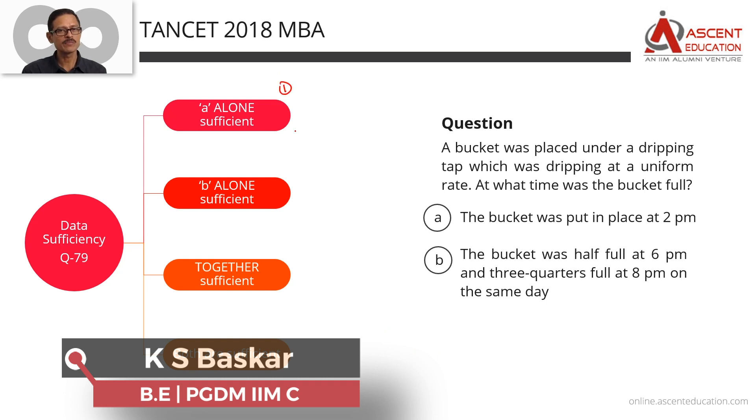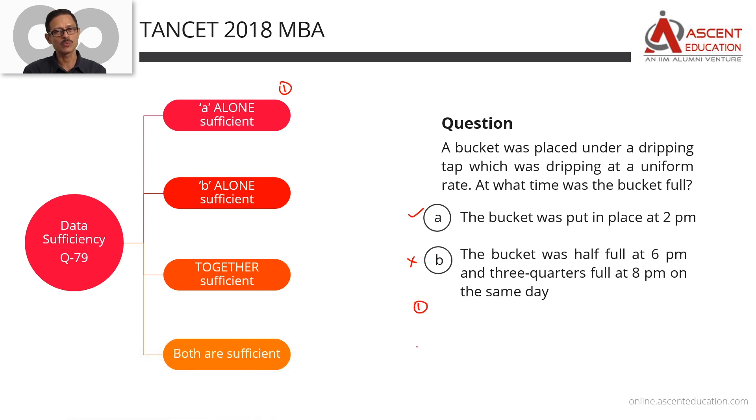Answer option is 1 if statement A alone is sufficient. Answer option is 2 if B alone is sufficient, A is not. Together the statements are sufficient, we'll go with 3 if A alone is not sufficient, B alone is not sufficient, but the two statements together provide sufficient data. Answer option is 4 if both statements are sufficient - which means A alone is independently sufficient, B alone is independently sufficient.